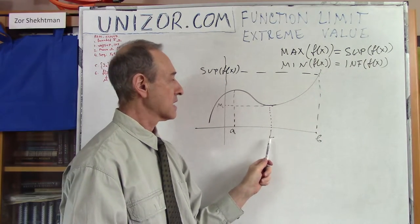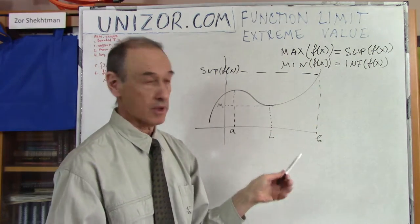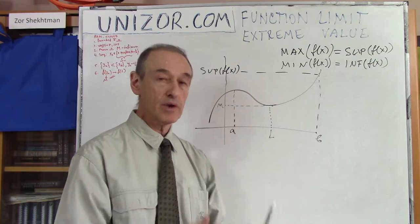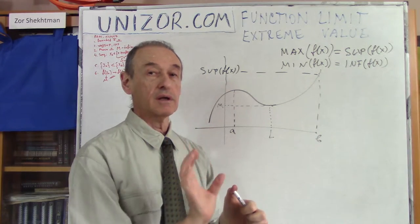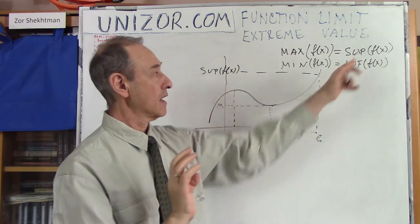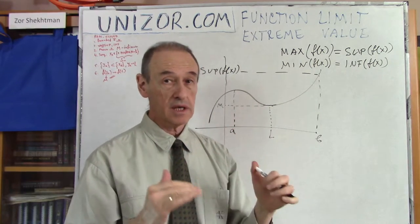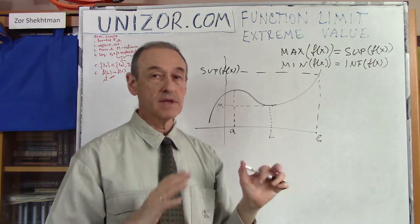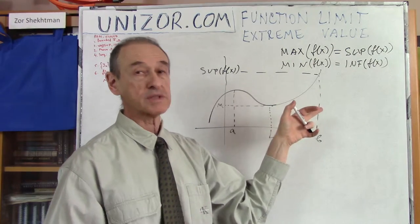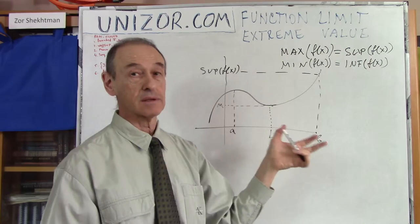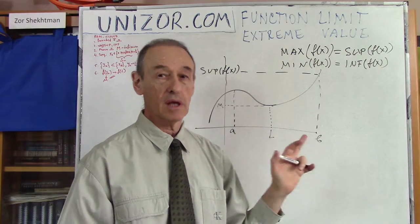There is a point L where the function attains its infimum, and that's why it's called the minimum — because it's a real value of the function. Minimum and maximum are real values of the function; supremum and infimum are limits the function approaches, either the least upper or greatest lower bound, but not necessarily equal. In the case of a continuous function on a closed segment, yes, they are attained — and that's why we can call them maximum and minimum.